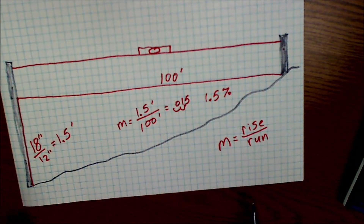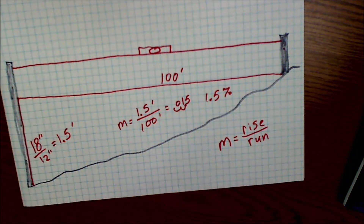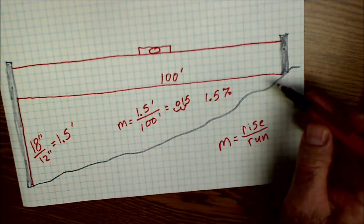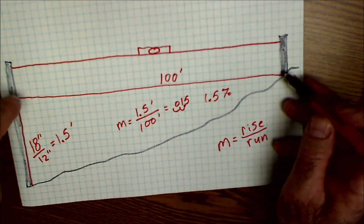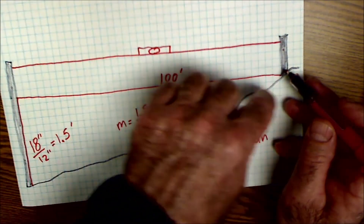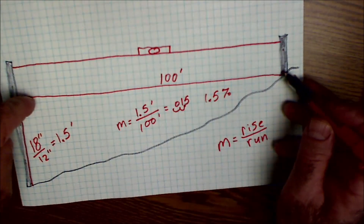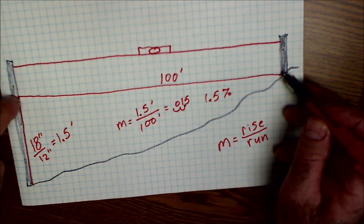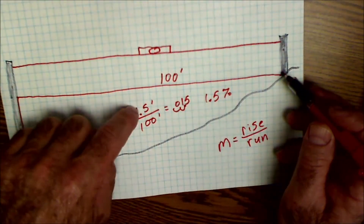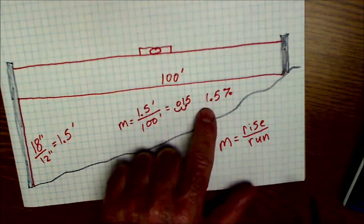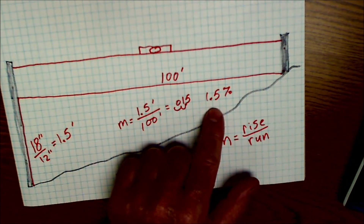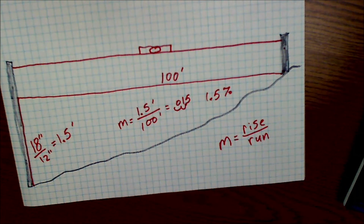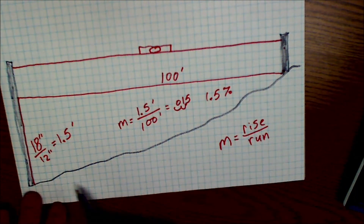So again, slope is rise over the run. You can find it easily on a grade by using stakes and string, pulling that string tight and getting it level, measuring your rise and your run. Rise over run is going to give you either your decimal slope, your rise over the run, or a percent grade. Again, that's an average.